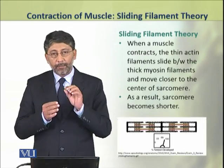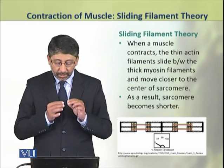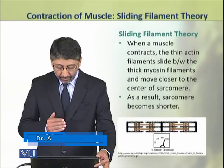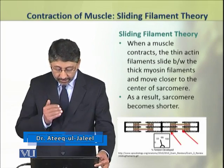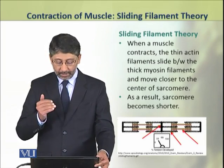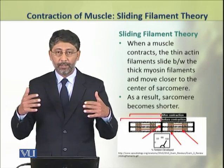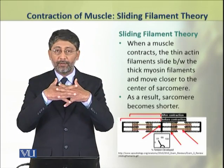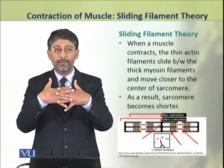When a muscle contracts, the thin filaments slide between the thick myosin filaments and move closer to the center of the sarcomere. As a result, the sarcomere becomes shorter — that is, the thin filaments slide past the thick filaments and the length of the sarcomere is shortened.